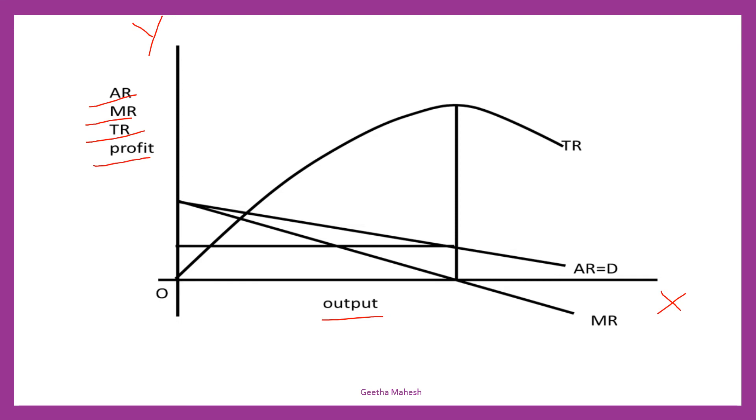You can observe TR is the total revenue, MR is the marginal revenue, average revenue AR, which is also known as demand curve. When firm is going to maximize its profit, when total revenue is maximum.